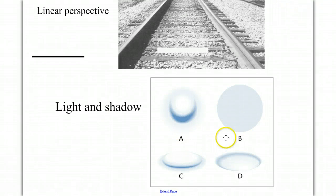And also light and shadow. And again, artists know that they can use light and shadow to give a sense of depth in a two-dimensional picture.